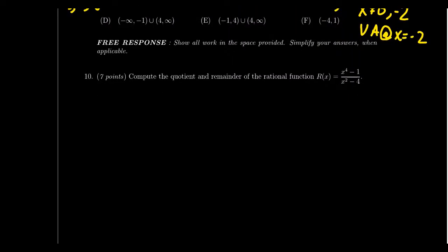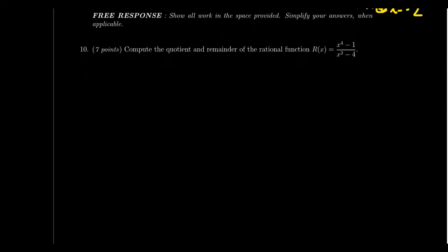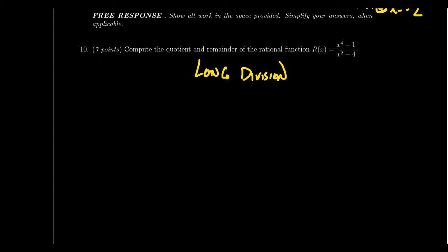Moving to the free response section: question ten asks you to compute the quotient and remainder when dividing one polynomial by another. Synthetic division won't work here because the divisor will be quadratic or larger — you must use polynomial long division, as covered in lecture 25, section 4.4. This question is worth seven points.